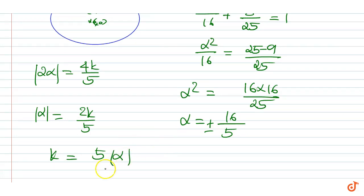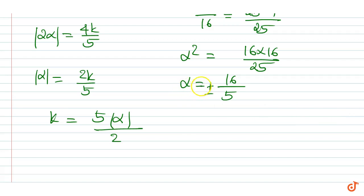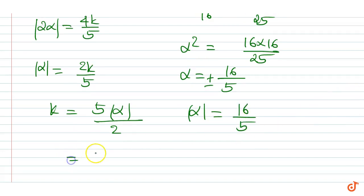Now, alpha is equal to plus or minus 16 by 5. This gives mod alpha equal to 16 by 5. Substituting, we get k is equal to 5 by 2 times mod alpha is 16 by 5, equal to 8. That is our answer.